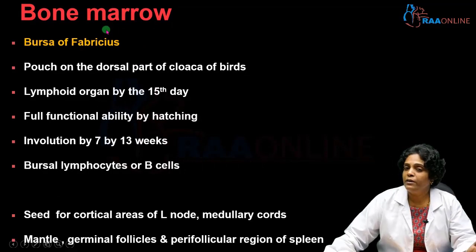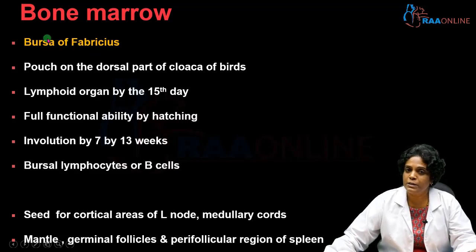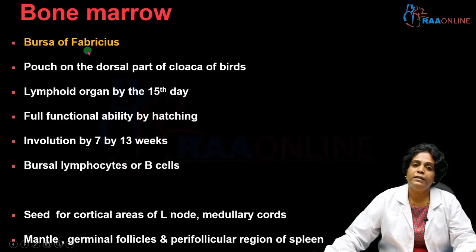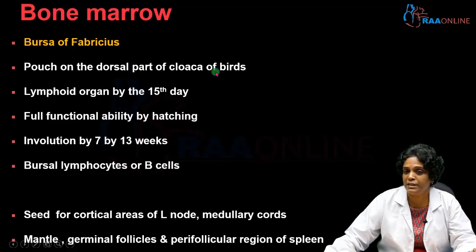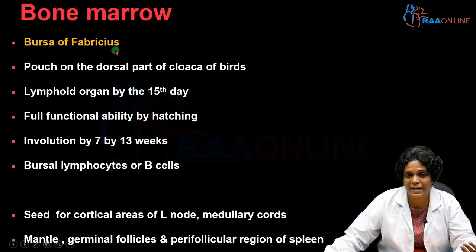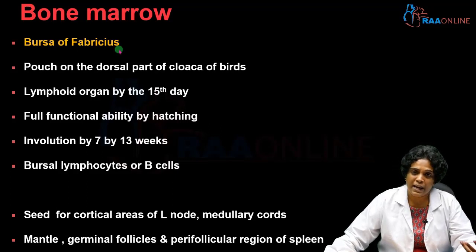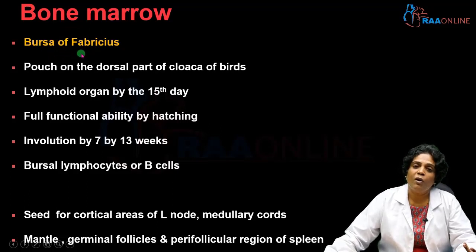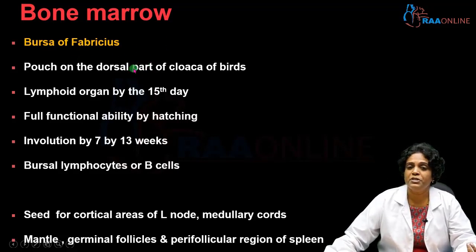To understand the function of bone marrow, we need to know about the organ called the Bursa of Fabricius. This organ is present in birds and is the predominant lymphoid organ in birds. Initially, B cell development and maturation was studied in the Bursa of Fabricius, and the B cell got its letter designation from this organ. The Bursa of Fabricius is located in the dorsal part of the cloaca of birds.